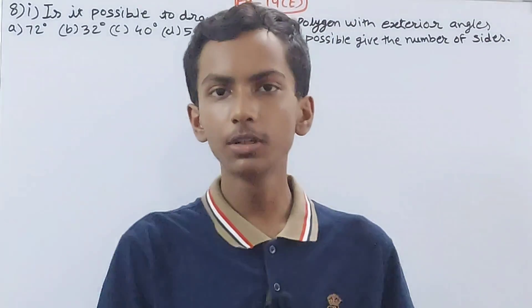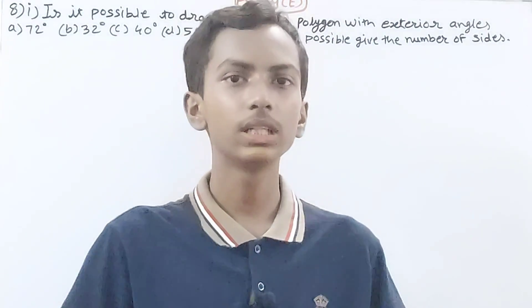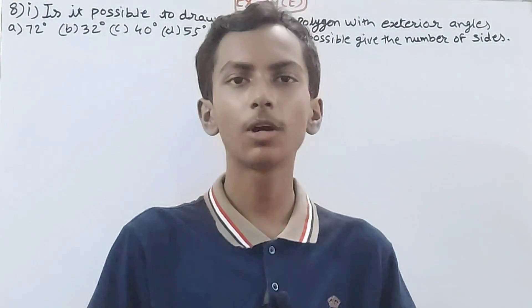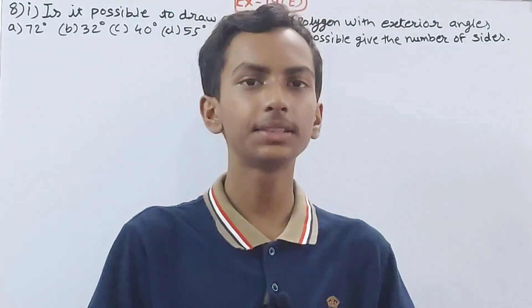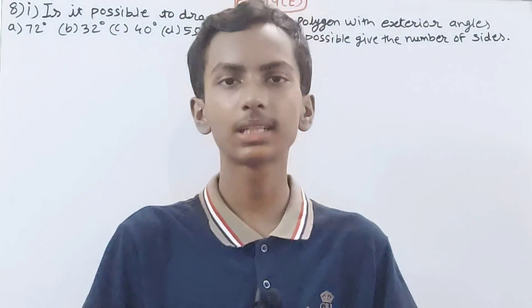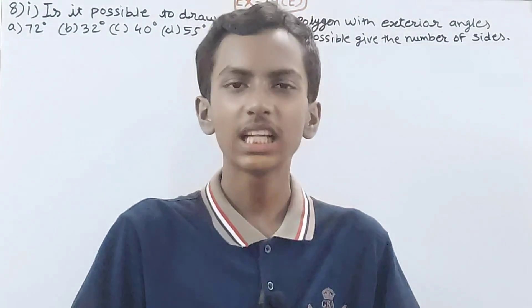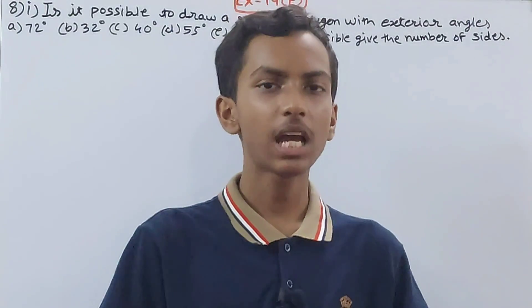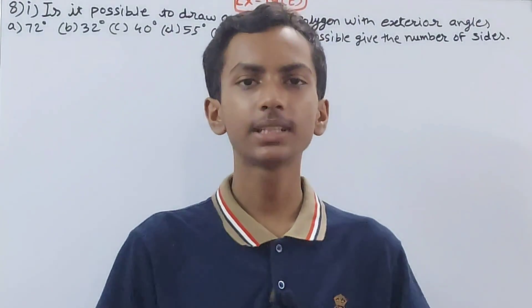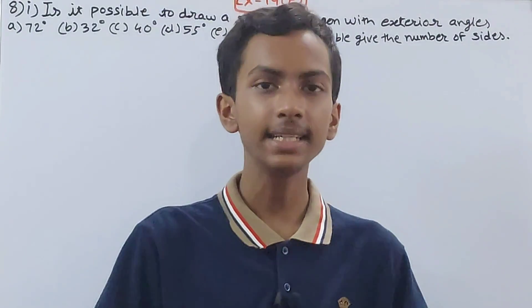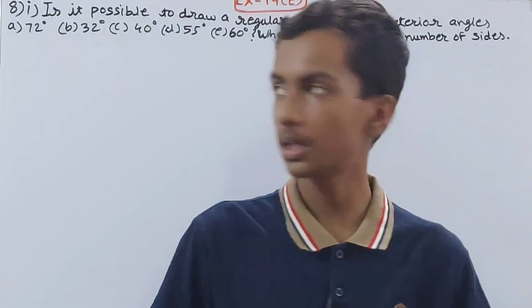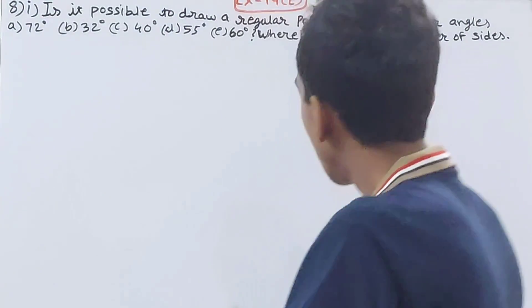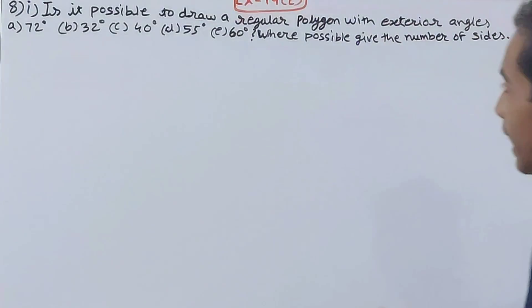Welcome back to my YouTube channel. In this video we are going to solve ICSE Mathematics Class 8, Chapter 19 - Special Types of Quadrilaterals, Exercise 19, question number 8: Is it possible to draw a regular polygon with the following exterior angles?